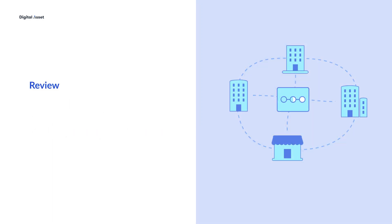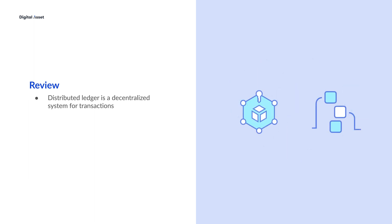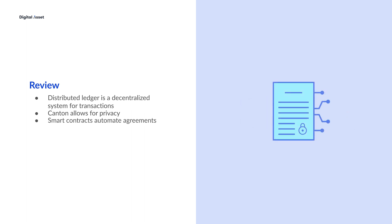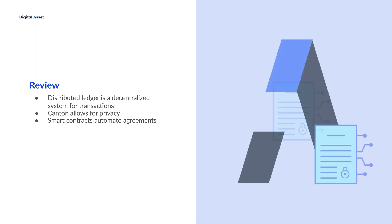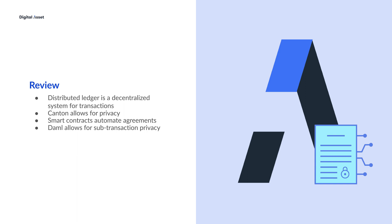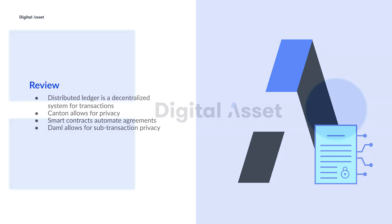Let's review. A distributed ledger is a decentralized system that can record and synchronize transactions. Canton is a unique distributed ledger that allows for privacy and operates on a permissioned network. Smart contracts automate agreements based on predefined conditions. DAML is a smart contract language that allows for sub-transaction privacy and is designed for the Canton network.